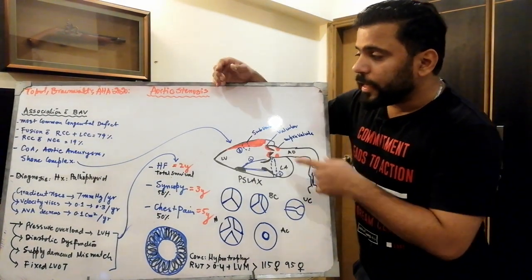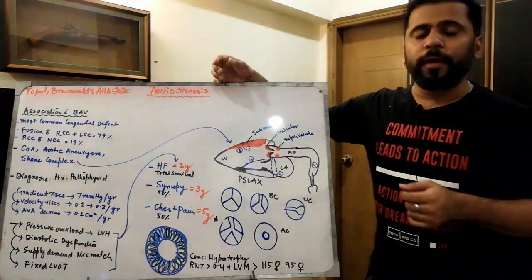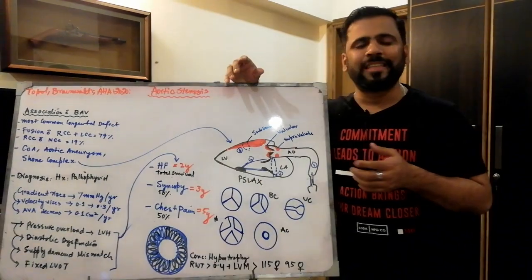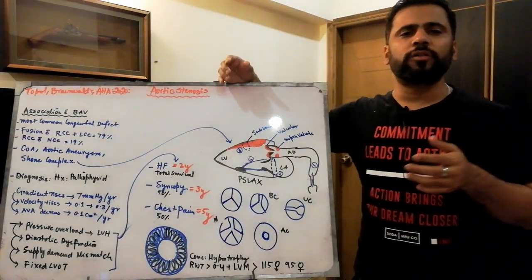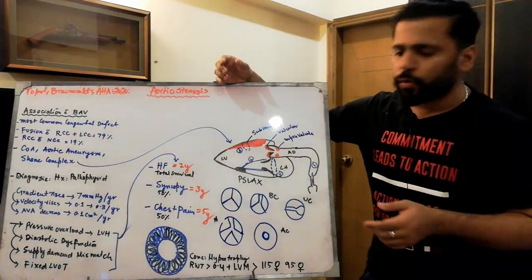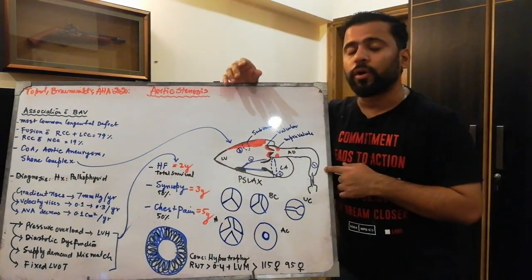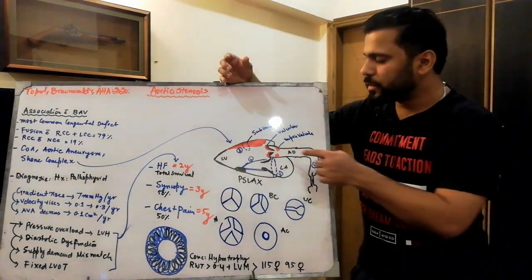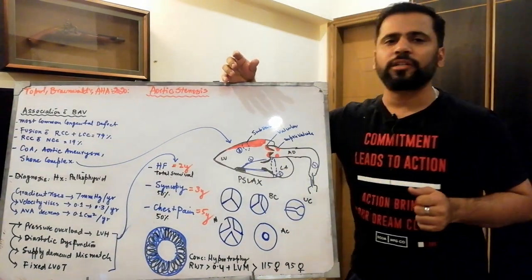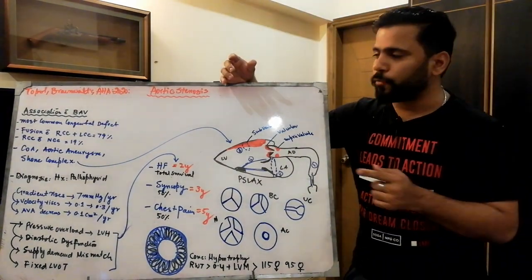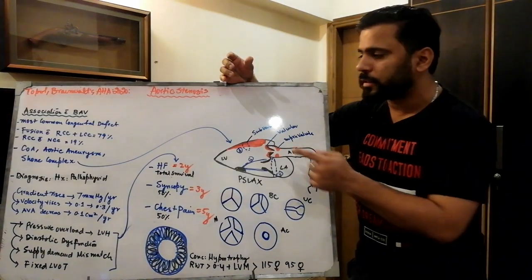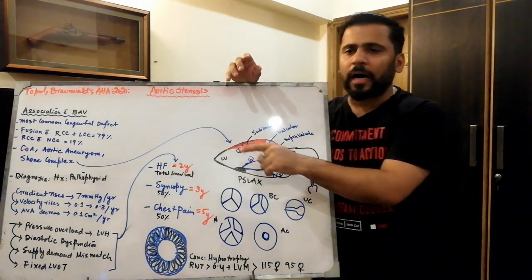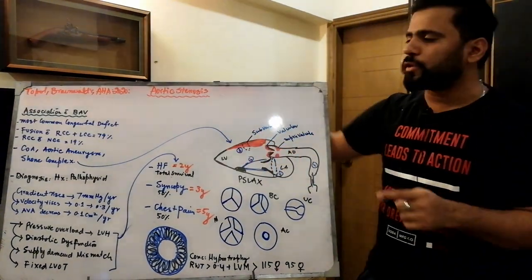The second important association is aortic aneurysm, which is very common because the abnormal flow causes dilatation and thinning of the aortic wall, leading to aneurysmal formation secondary to the bicuspid aortic valve, and you must look for this as well.